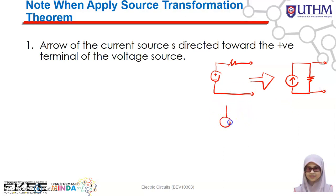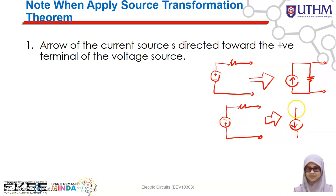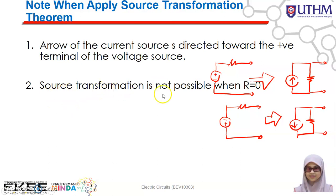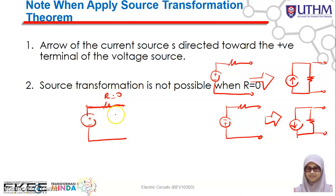For example, if you have a voltage supply with negative on the left and positive on the right, when you transform it to a current source, the arrow will point toward the positive terminal. Also note that source transformation is not possible when R equals zero — meaning if you have a voltage supply with no resistor connected in series (short circuit), you cannot perform source transformation for that configuration.